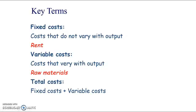For example, line rental for phone lines is a fixed cost — it doesn't matter how many calls you make, the line rental stays the same. But the charges per call are variable. So a telephone has elements of being both fixed and variable. Total costs equal total fixed costs plus total variable costs.